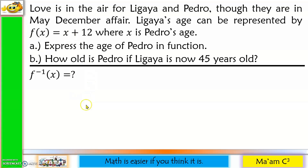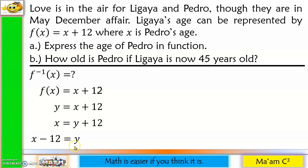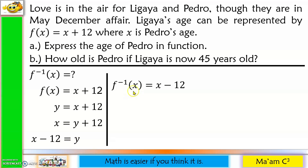To do that, let us recall the steps in determining the inverse. First step: change f(x) to y. Second step: interchange x and y. Third step: solve for y. To solve for y, move 12 to the other side, so this becomes x minus 12 equals y. Last step: change y into f inverse of x. So f inverse of x is equal to x minus 12.